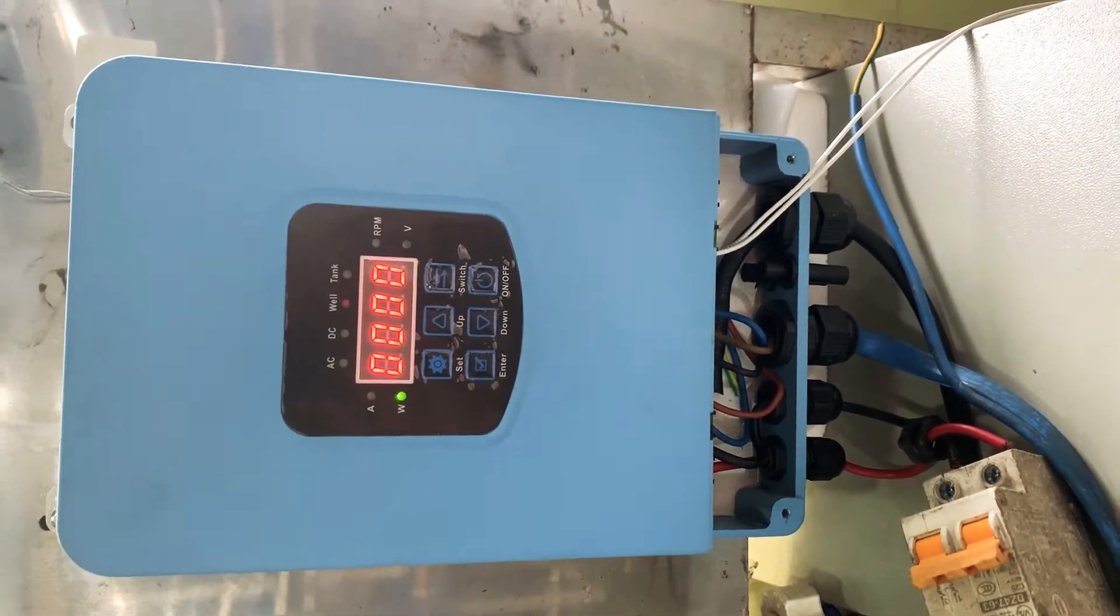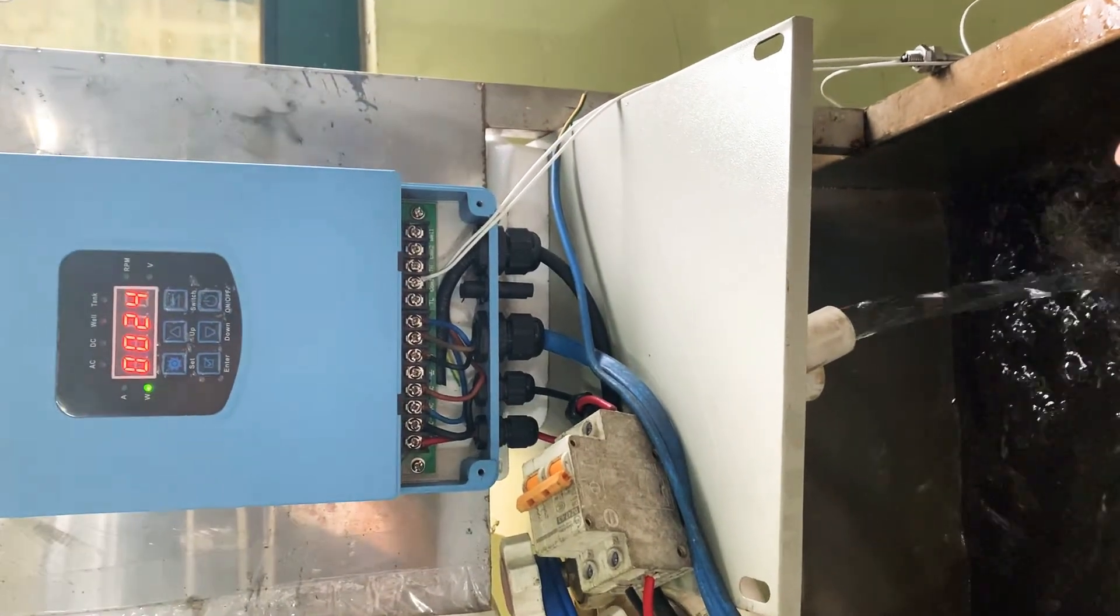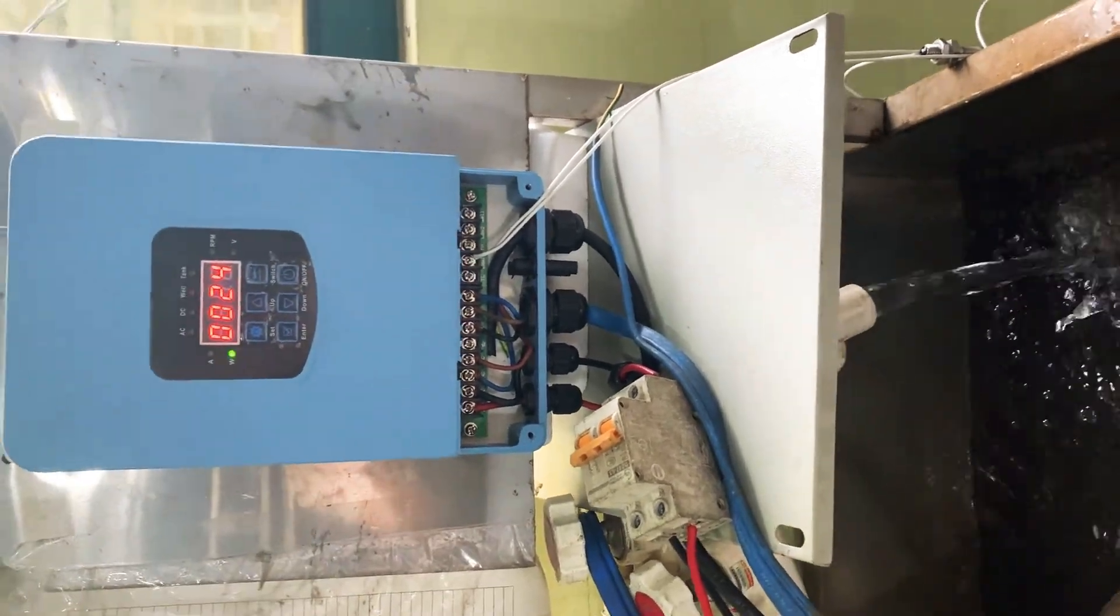If you use DC power, water flow is smaller because now it's raining day, no sunshine.